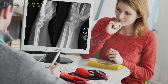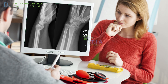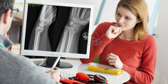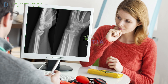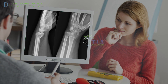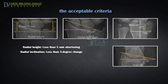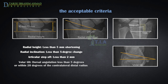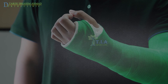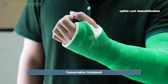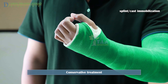Treatment: Once physicians take into account factors like the age and activity level of the patient and the nature of the fracture, they can determine if the fracture can be reset without surgery or requires surgery. Non-surgical treatment requires acceptable fracture criteria, which are: radial height shortening less than 5 millimeters, radial inclination less than 5-degree change, articular step-off less than 2 millimeters, and dorsal angulation less than 5 degrees or within 20 degrees of the contralateral distal radius. If the fracture is in a good position, a splint or cast is applied until the bone completely heals.